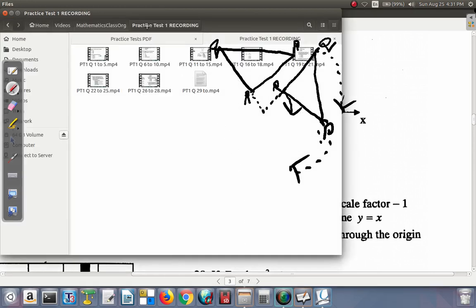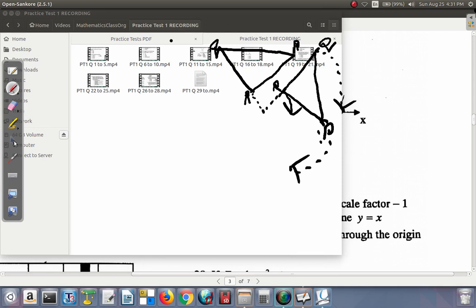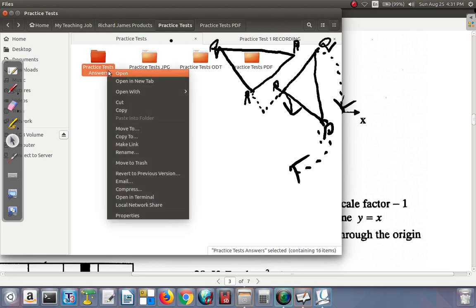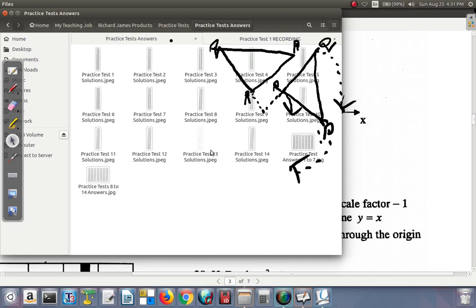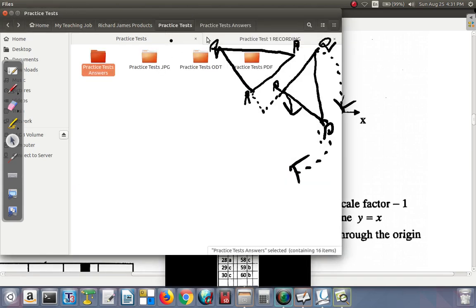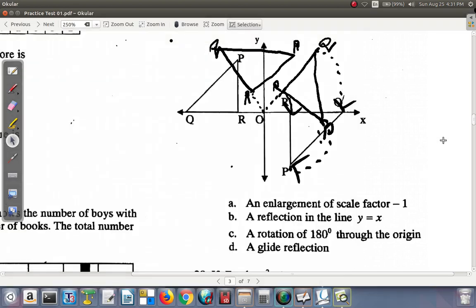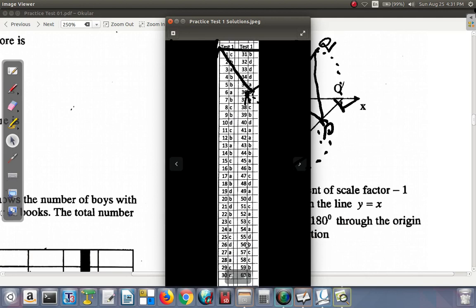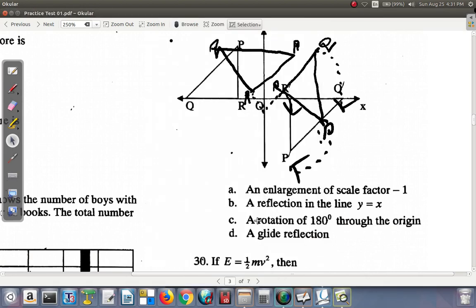Let me just take a look at the answers as confirmation and also to make sure that everything is alright with them. So in this case, this is question 29, and question 29 is C. It's a rotation of 180 degrees through the origin. You can see that it's definitely a rotation.